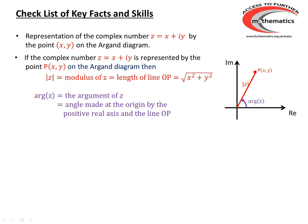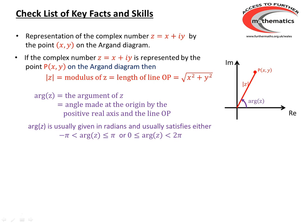We should know that the modulus of z is the length of the line joining the origin to the point representing z — that is simply the square root of x squared plus y squared, if z is x plus iy. And the argument of z is the angle made at the origin by the positive real axis and the line going from O to P. The argument is normally given in radians and is usually either an angle between minus pi and pi, or an angle between 0 and 2 pi. We should know that if the modulus of z is r and the argument of z is theta, then z is r times (cos theta plus i sin theta).